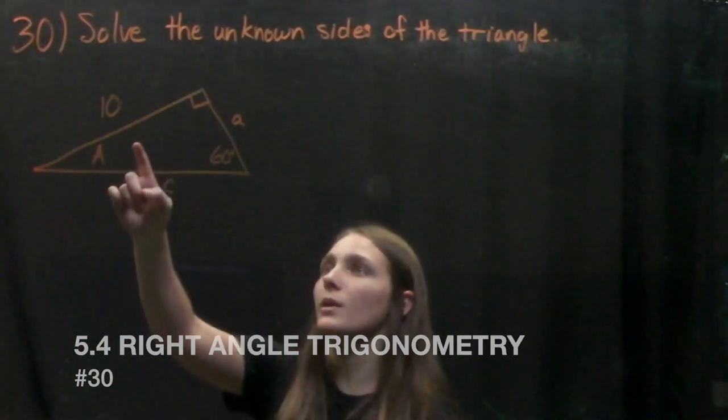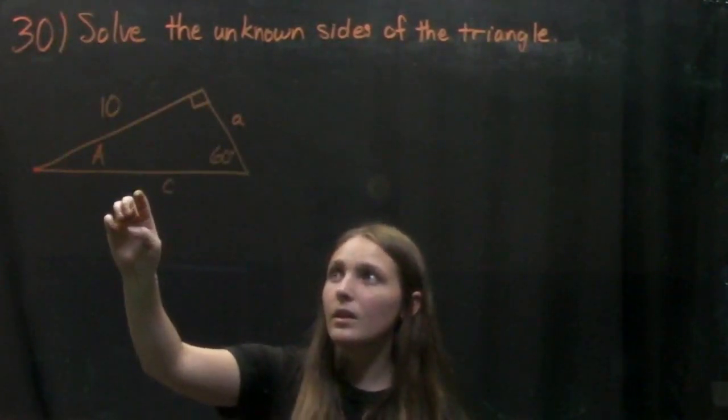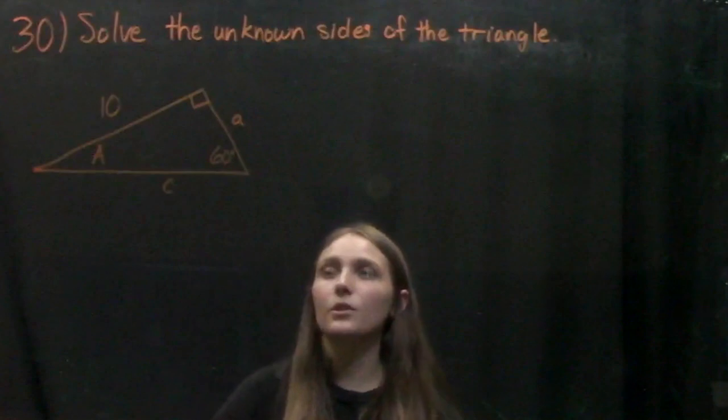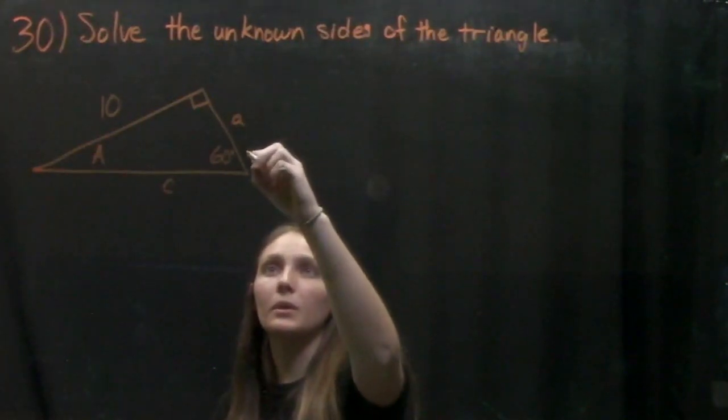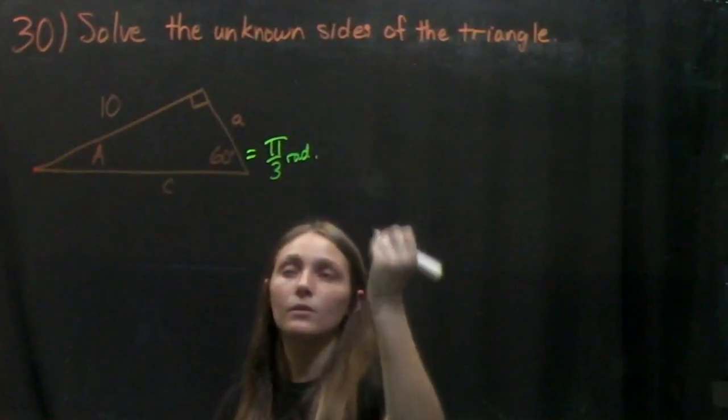Here we've got a triangle with side A, 10, and hypotenuse C. We see that one of our angles is 60 degrees, which we know is also equal to pi over 3 radians.